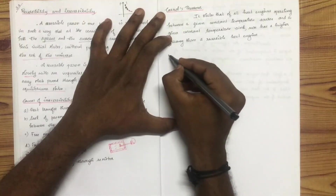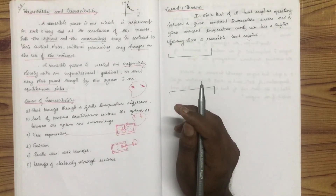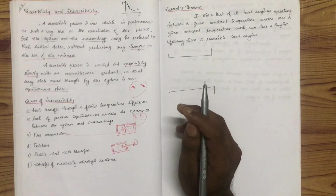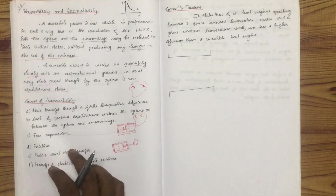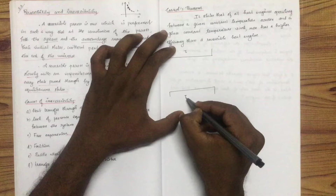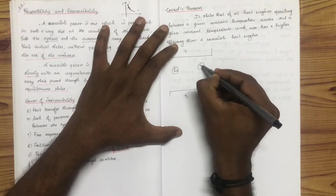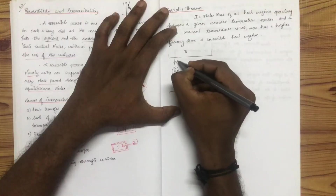What do we mean by Carnot's theorem? We consider the same reversible heat engine. A reversible heat engine operates as an inverse heat engine — this is a Carnot cycle. The Carnot cycle has a reversible heat engine representing a high temperature reservoir T1 and a low temperature reservoir T2.